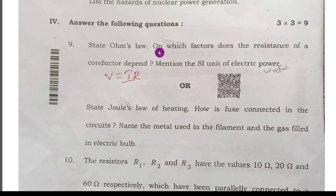On which factor does the resistance of the conductor depend on? Therefore, conductor depends on the length of the conductor, nature of the conductor, temperature of the conductor, and area of cross section of the conductor.